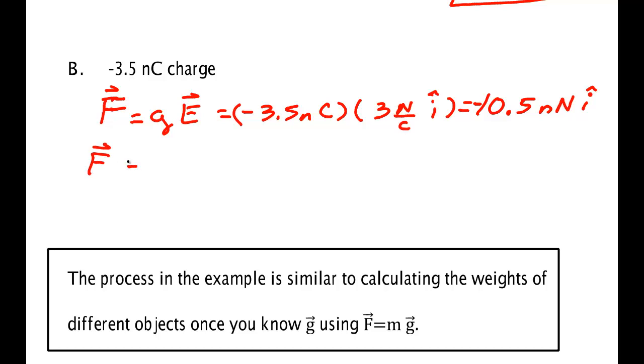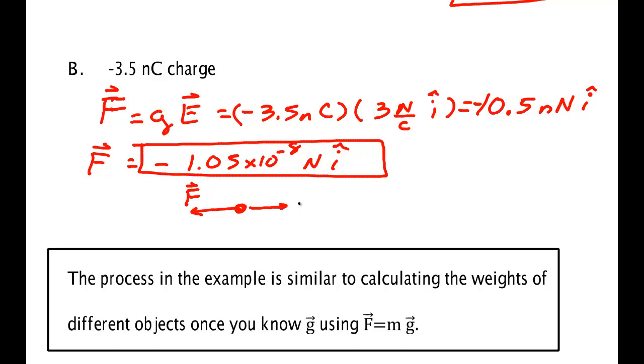So minus 1.05 times 10 to the minus 8 newtons. So we have a bigger force and it's in this case pushing in the opposite direction. Notice the electric field is in this way, but because this is a negative charge, the force is in the opposite direction. The electric field points in the direction a positive charge would experience the force. A negative charge will experience the force in the opposite direction of the electric field.